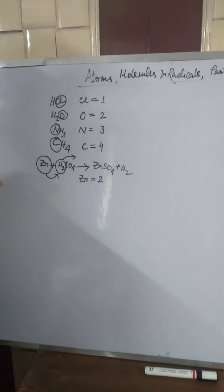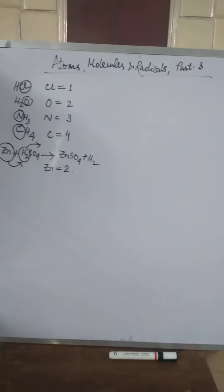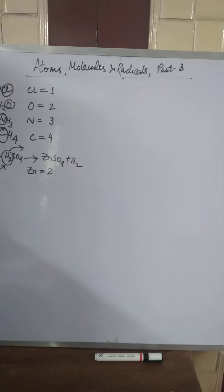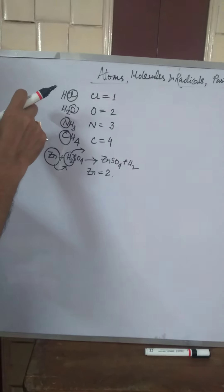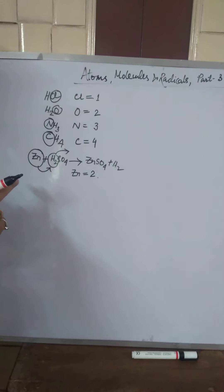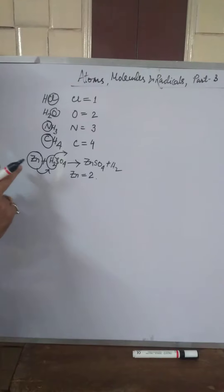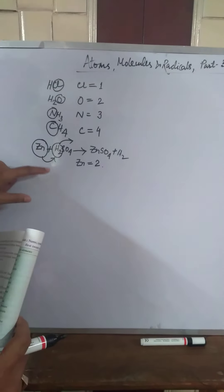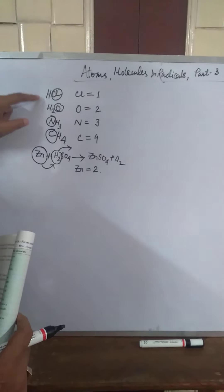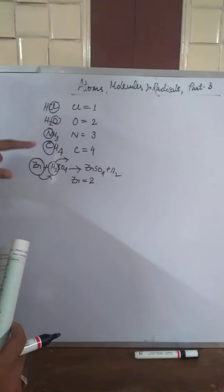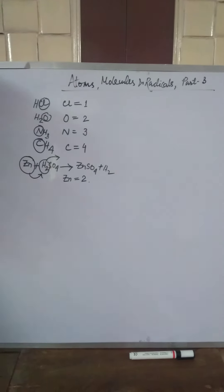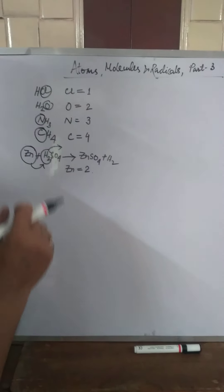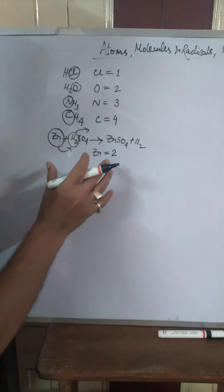According to the definition, the valency of an element or a radical is the number of hydrogen atoms that will combine with or displace one atom of that element or radical. Here, zinc displaces two atoms of hydrogen. Either how many hydrogen atoms are displaced by one atom of that element, or how many hydrogen atoms are attached with one atom — that is the criteria to determine the valency of an atom. This is the fundamental concept; in higher classes, you will learn other concepts of valency.